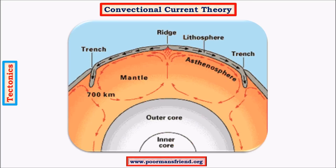According to convection current theory, there is continuous movement of magma within the mantle called convection currents. There is also movement of magma in the outer core, which is in a molten state. The convection currents in the outer core are very important in the study of magnetic field, because the magnetic field of earth is mainly generated due to convection currents in the outer core. For our understanding of sea floor spreading, we focus on convection currents in the mantle.